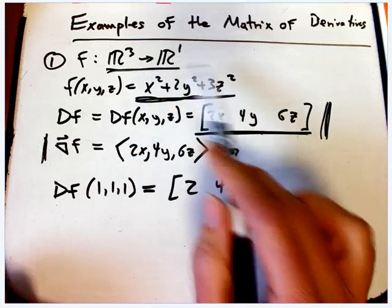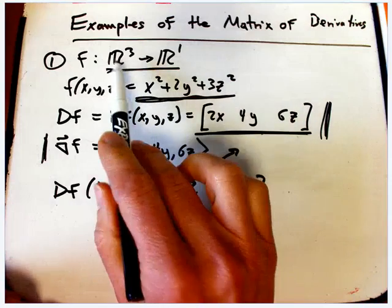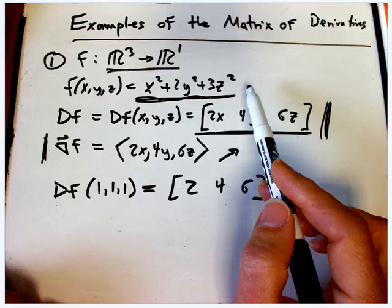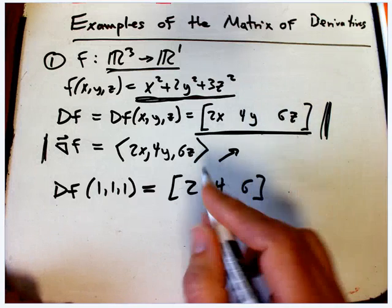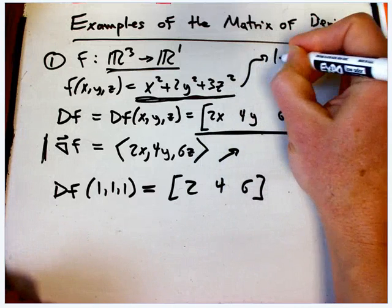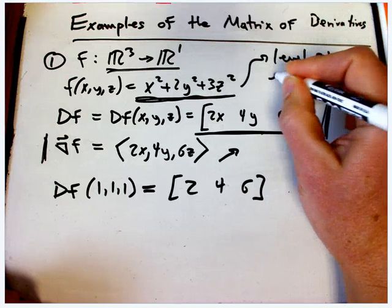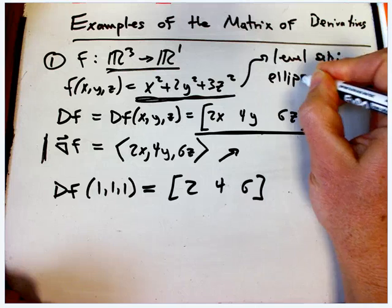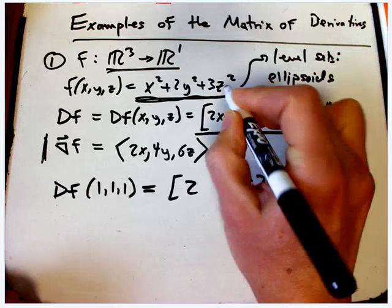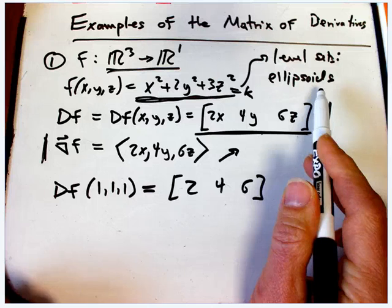But one other hint of some really nice uses of the matrix of derivatives: how would you understand this function? Not its derivative, just this function. Well, often looking at level sets is a great idea. When you have a function with three inputs, you can't exactly graph the inputs and outputs together. You'd need four dimensions. And the level sets of this are, of course, ellipsoids. You just set this equal to a constant, and they're going to be ellipsoids.